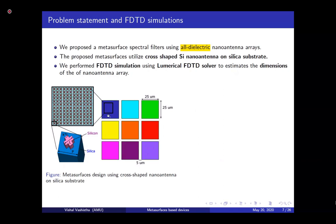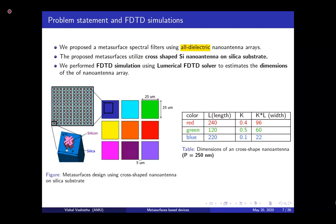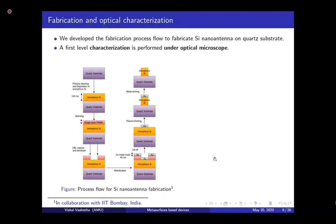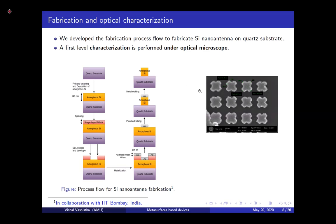To determine which color will be reflected, we performed calculations of length, width, and periodicity using a numerical FDTD solver. We created a matrix for different colors and identified which color will be reflected based on the dimensions. We then developed a fabrication process flow at IIT Bombay in collaboration with IIT Bombay, India. After this time-consuming fabrication process, you end up with a quartz substrate with silicon nano antennas on top. We also characterized the device and found that the fabricated dimensions are very close to our simulation.